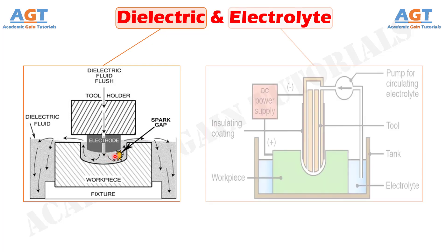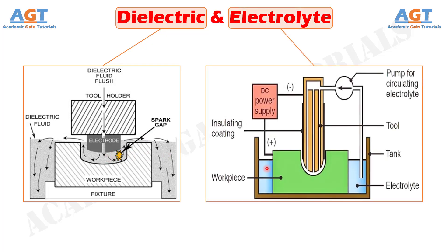On the other hand, an electrolyte is basically a conductive liquid that carries ions and electrons under the presence of potential difference across two electrodes in electrochemical machining. Composition, concentration, fluidity, and temperature of the electrolyte are crucial factors that can influence capability and material dissolution rate in electrochemical machining.